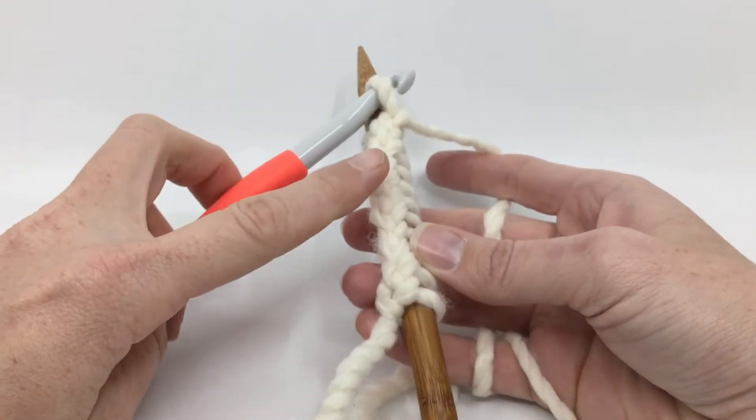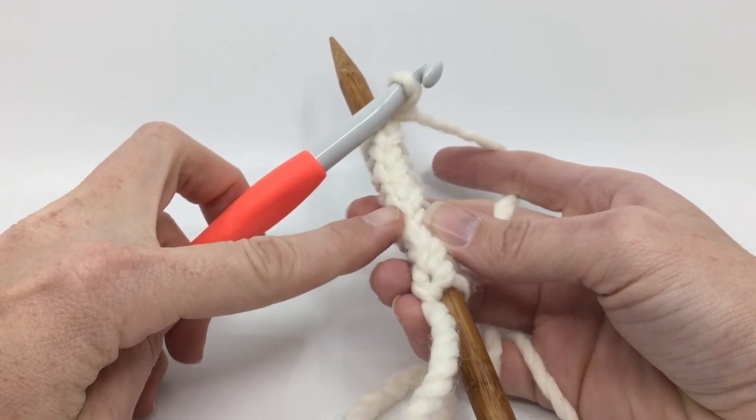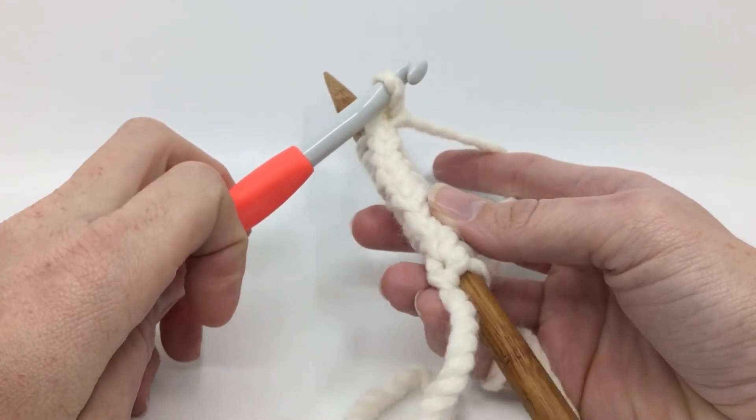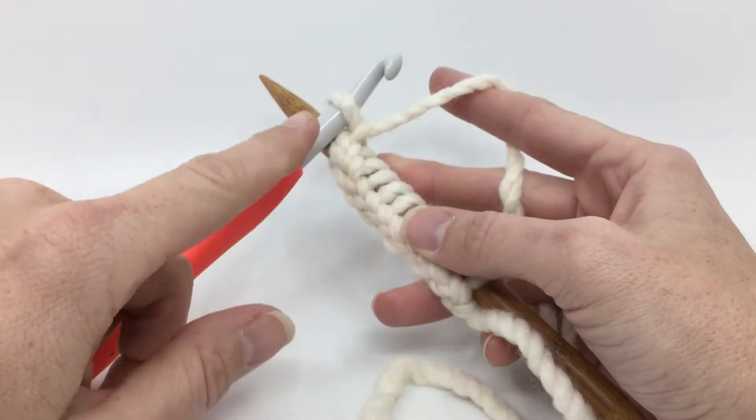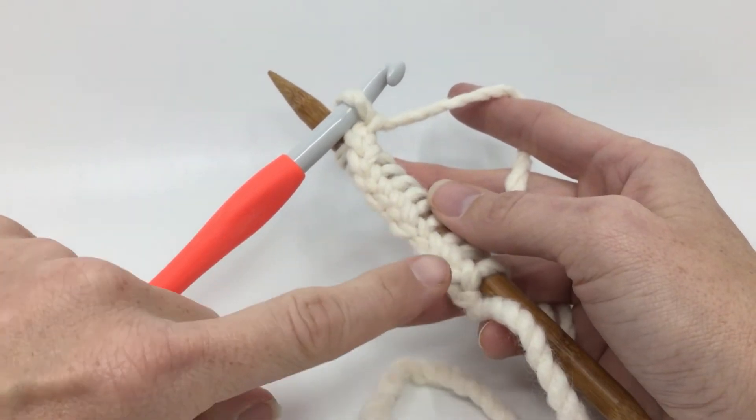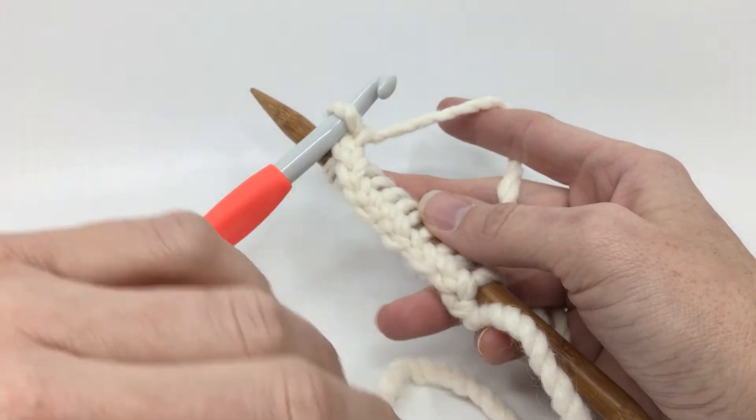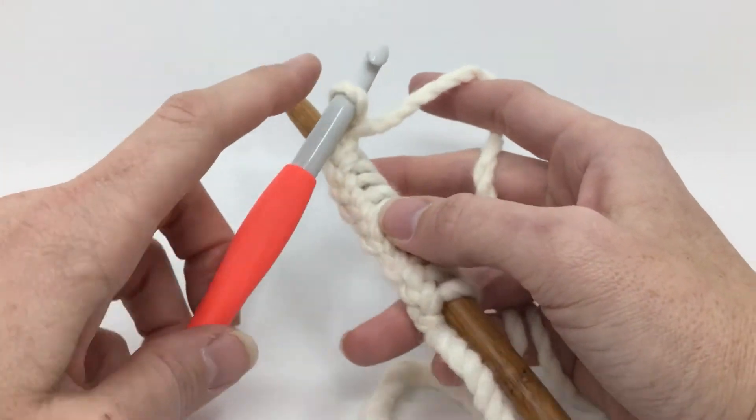It gives you that foundation crochet edge. It's going to look identical to your bind off edge where you actually bind off your stitches. So it's a great choice when you're doing nothing to your edge.